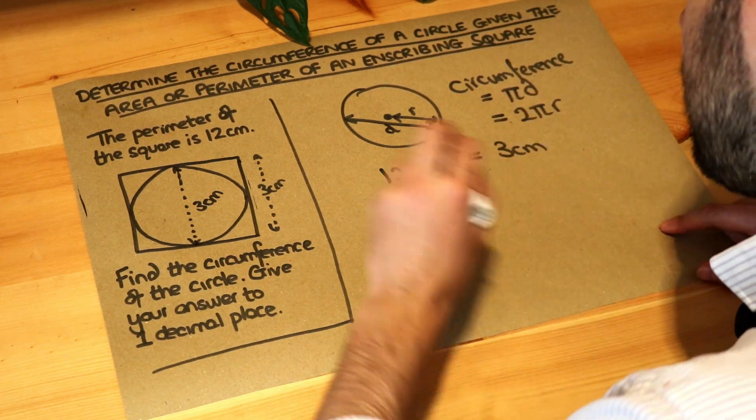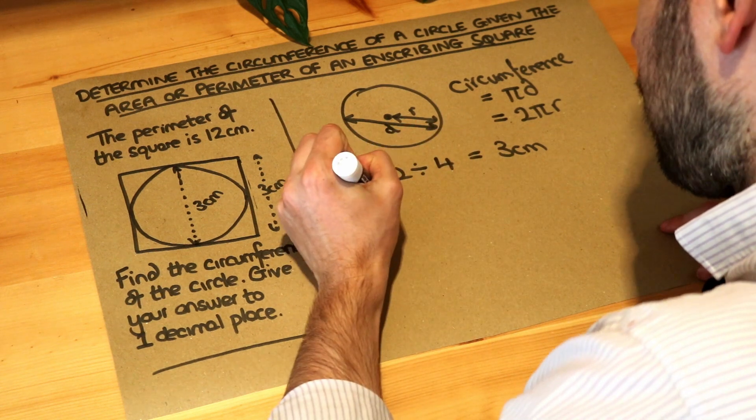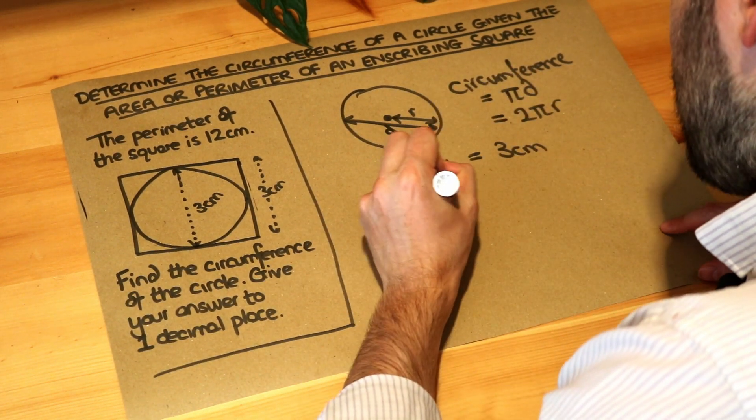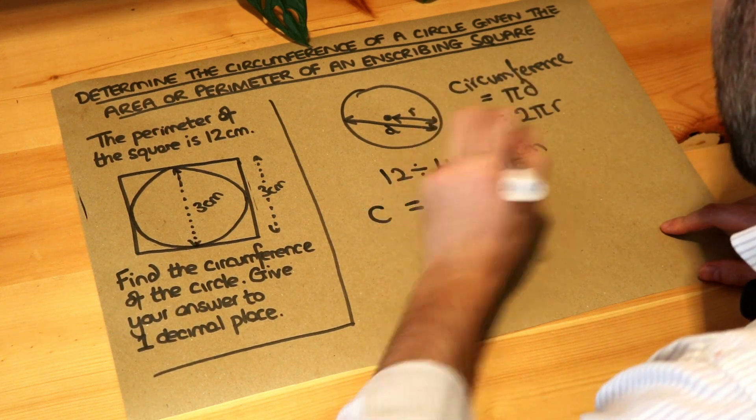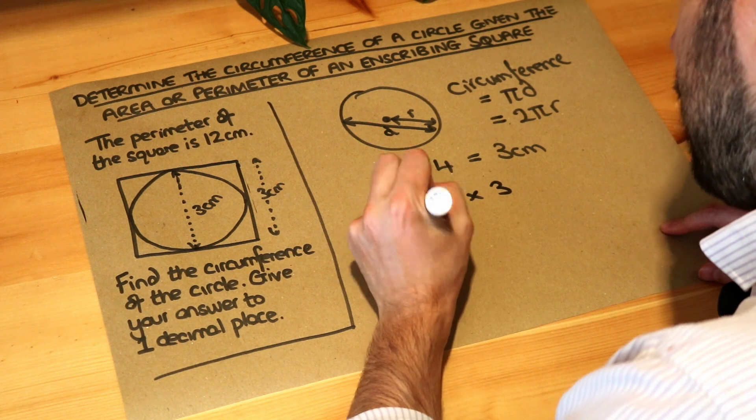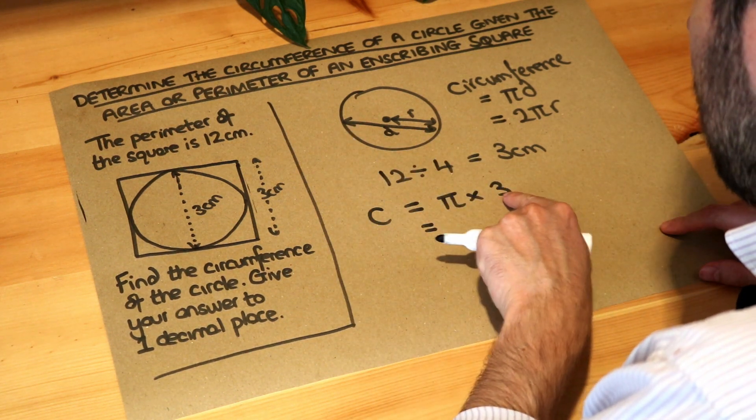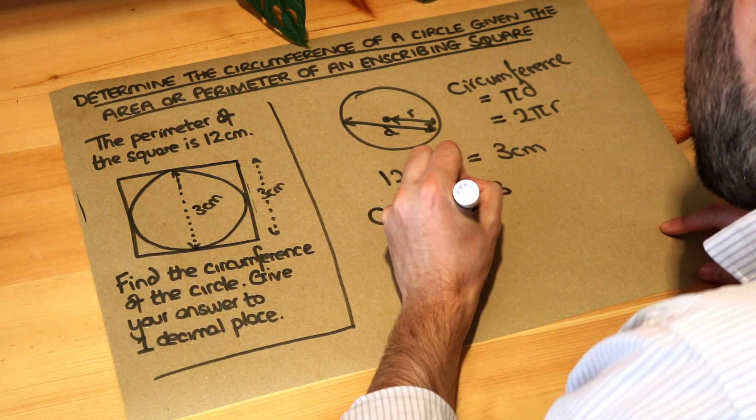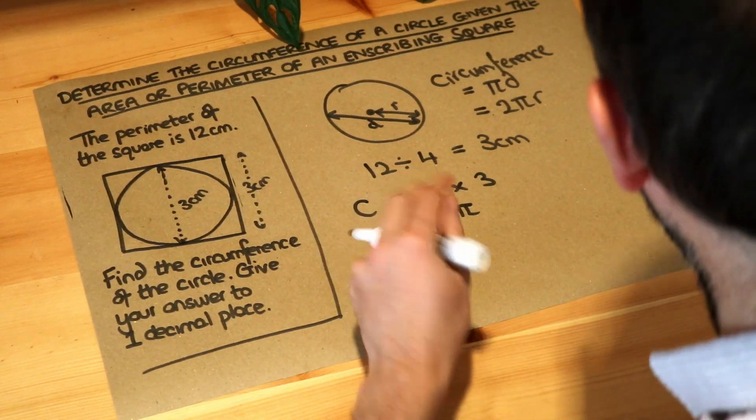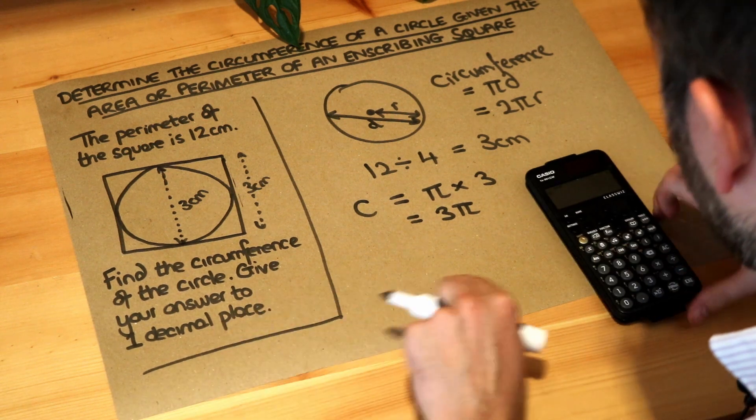The circumference of the circle is just π times the diameter, so the circumference of the circle, I'm just gonna use C for short, is π multiplied by the diameter of the circle, which we said was three. That gives us, well if we want to simplify that, it'd be 3π, because we always put the number before the pi, so it's three lots of pi, 3π. But we want it as a decimal, so we have to put 3π in our calculator.